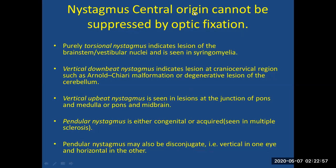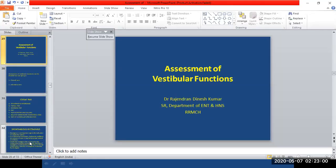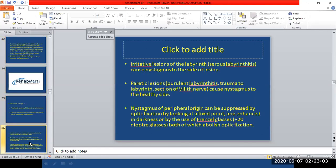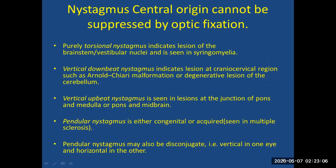Central nystagmus cannot be suppressed by optic fixation. Purely torsional nystagmus indicates lesions in the central system — brainstem or vestibular nuclei, as in syringomyelia. Vertical downbeat nystagmus indicates a lesion in the craniocervical region, as in Arnold-Chiari malformation or degenerative lesions of the cerebellum. Vertical upbeat nystagmus is seen in lesions at the junction of the pons and medulla or in the pons and midbrain.